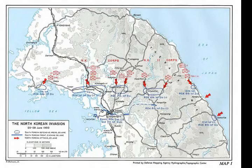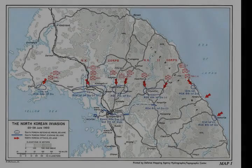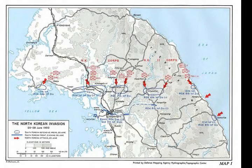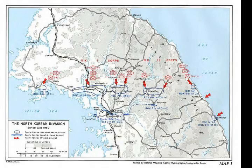On 25 June 1950, Korean People's Army forces crossed the 38th parallel and invaded South Korea. The KPA utilized a blitzkrieg-style invasion using T-34 tanks supported by artillery. The Republic of Korea Army had no methods of stopping the onslaught of tanks as they lacked anti-tank weapons and had no tanks at all.